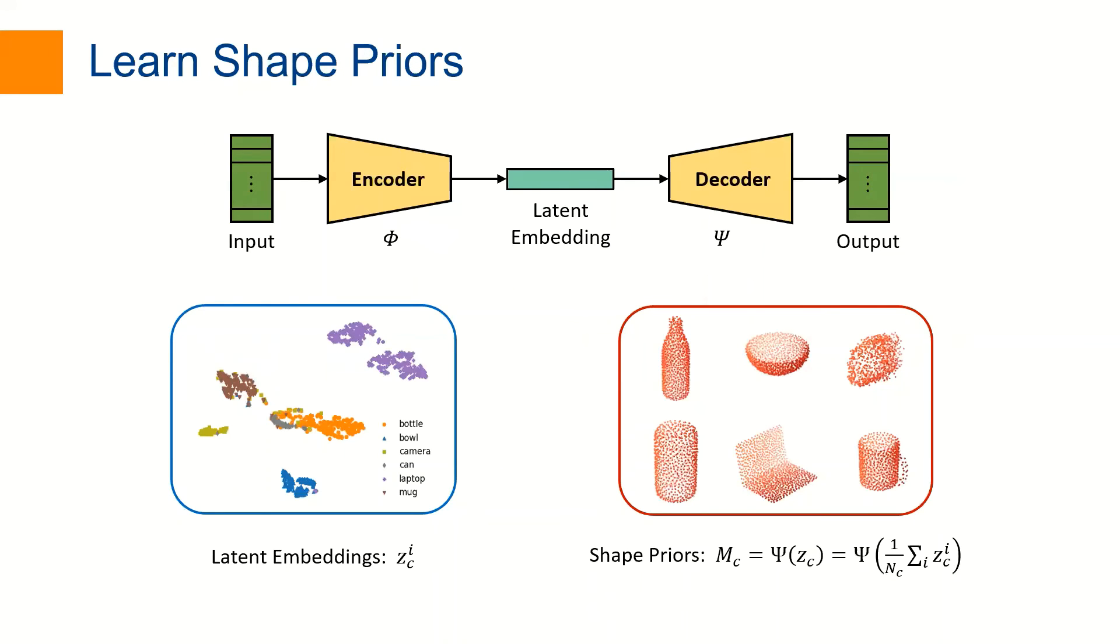We train an autoencoder on our collection of models and pass the mean network embedding through the decoder to get the shape prior for each category.